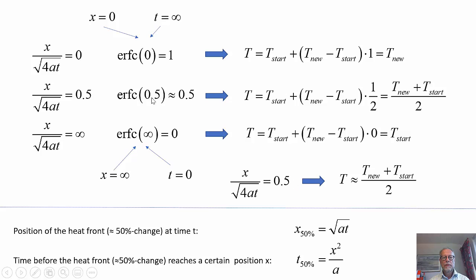We can find out that when the argument is 0.5, we roughly have half the change into the material. This is a very important finding.